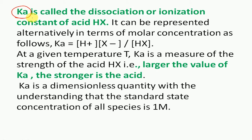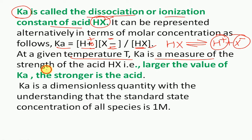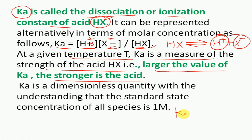Ka is the ionization constant for a weak acid. In the general case, Ka = [H+][X⁻] / [HX] at a given temperature T. Ka is a measure of the acidic strength of HX — the larger the value of Ka, the stronger the acid. When more H+ ions dissociate, the numerator is larger, Ka is larger, and the species is more acidic.